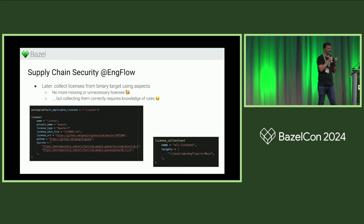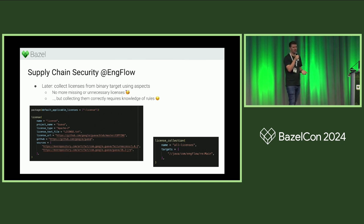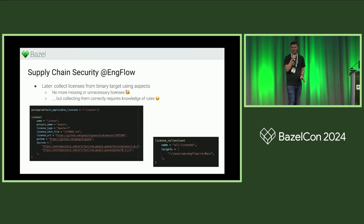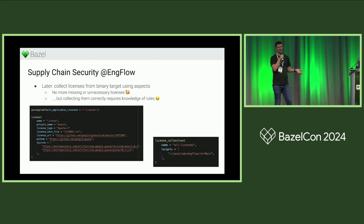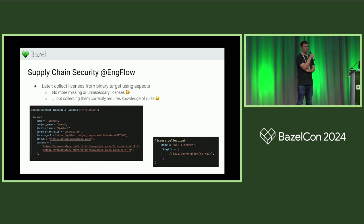Later we improved things by using an aspect to collect all the licenses. We still had the license target next to the jar file, but we put it into a special attribute that is automatically propagated to every target in the package. Then we had a top-level aspect to collect transitively everything the target depends on. This ensures every license in the final license output file is exactly the licenses that were used.